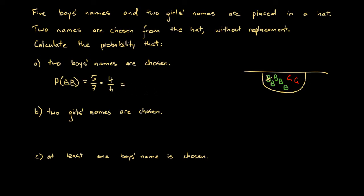Four over six simplifies to two over three. So we can write this as five over seven times two over three. Multiplying through, we get 10 over 21. So the probability that two boys are chosen is 10 over 21.